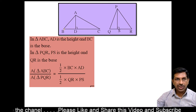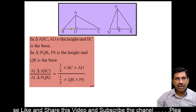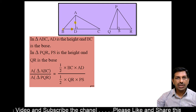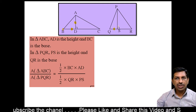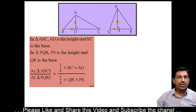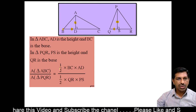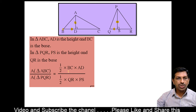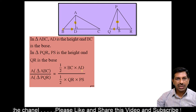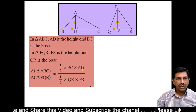If we observe this figure, we see that BC is the base of triangle ABC and AD is its height. Now according to our formula of area of triangle, area of triangle ABC is equal to 1 upon 2 into base into height, so that is 1 by 2 into BC into AD.